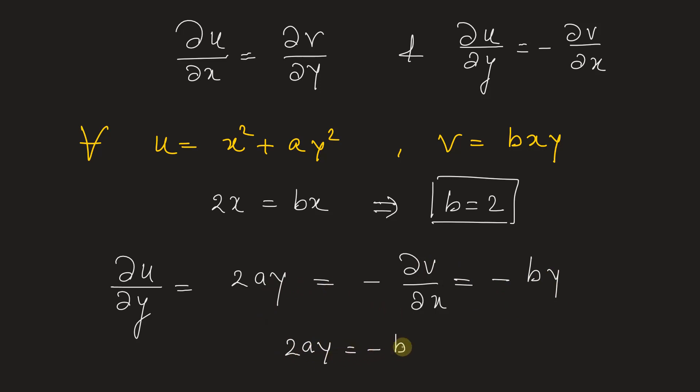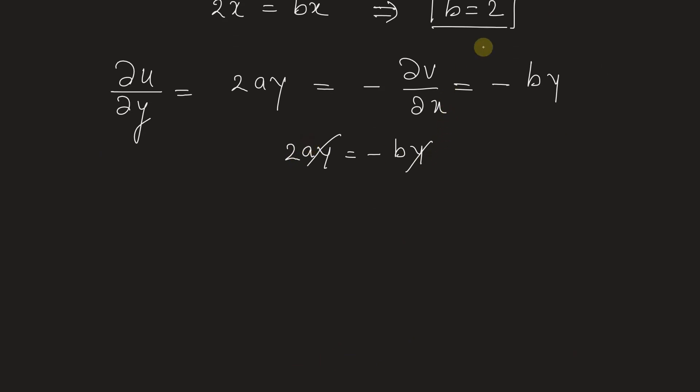2 a y is equal to negative b y and we can cancel out y, and we know the value of b here, that is 2.